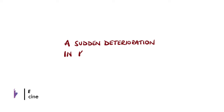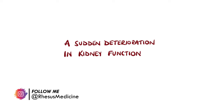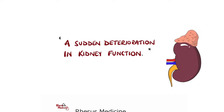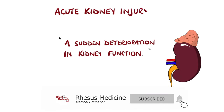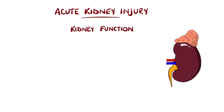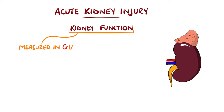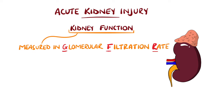A sudden deterioration in the function of the kidneys is known as an acute kidney injury, sometimes also called acute renal failure. To measure this reduction in kidney function, glomerular filtration rate, or GFR, is normally used, which is a measurement of how well the kidneys are filtering the blood.